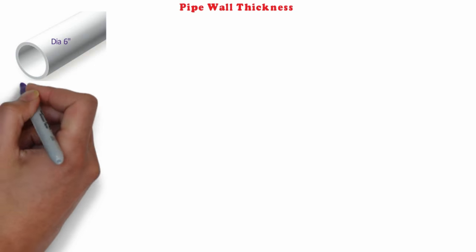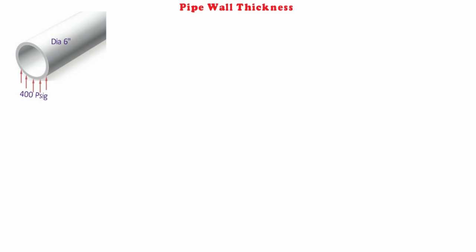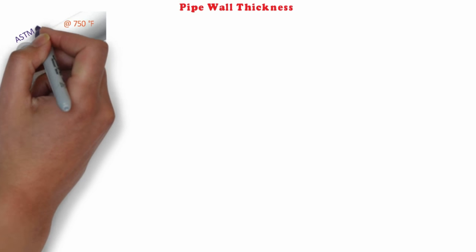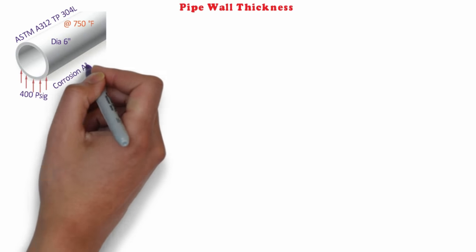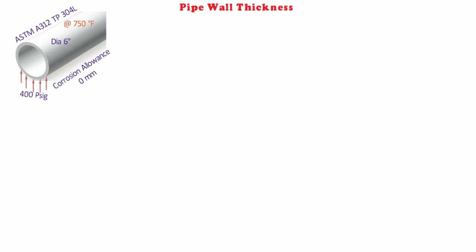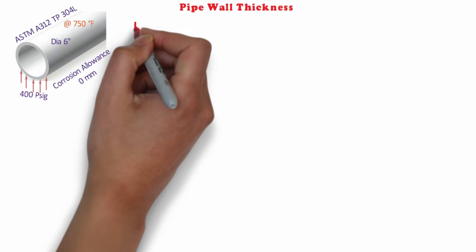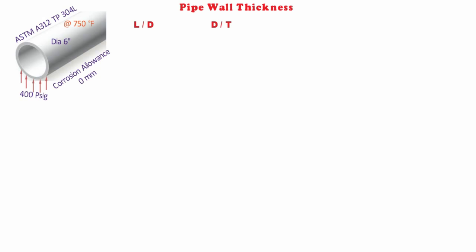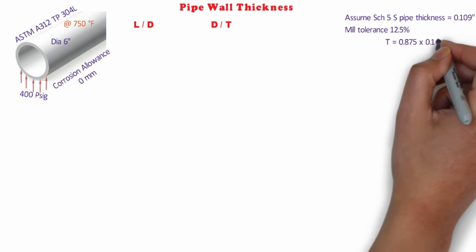Let's see how through an example. A 6 inches (150 mm NB) pipe has an external design pressure of 400 psig at 750°F. The material of construction is seamless austenitic stainless steel to ASTM A312 TP 304L. The corrosion allowance is nil. Calculate thickness and select a schedule. First, we assume the value of t to determine L/D₀ and D₀/t. D₀ for 6 inches NB pipe is 6.625 inches. Assume schedule 5S pipe, so nominal thickness is 0.109 inches. Minimum thickness considering negative mill tolerance of 12.5%, t = 0.875 × 0.109 = 0.095 inches.